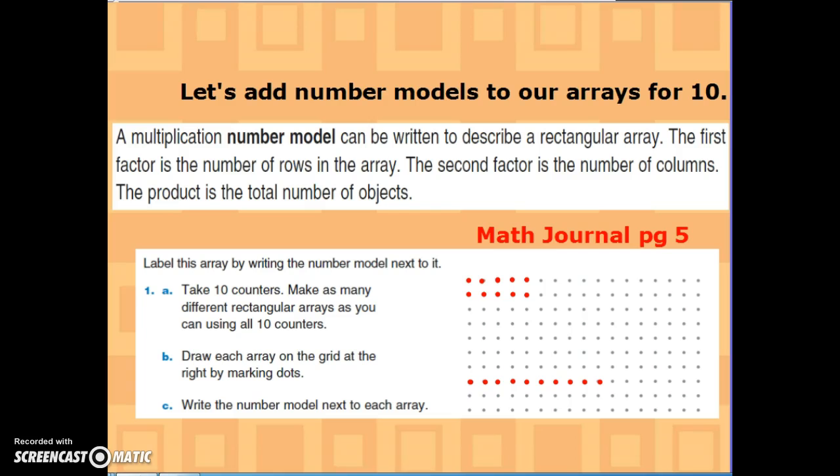So if you go to page five in your math journal, we're going to take a look. It says, a multiplication number model can be written to describe a rectangular array. The first factor is the number of rows in the array. The second factor is the number of columns. The product is the total number of objects.